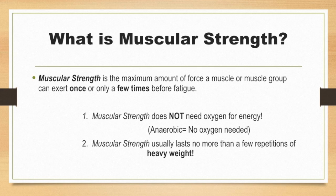Muscular strength does not need oxygen for energy. A fancy word you will learn later is anaerobic — anaerobic means no oxygen is needed for that exercise. Aerobic means oxygen, and the prefix 'an' means no, so anaerobic means no oxygen needed. Muscular strength usually lasts no more than a few repetitions of heavy weight — a repetition is how many times you can do something, and if you can only do it a couple times it's usually because you're lifting heavier weight.